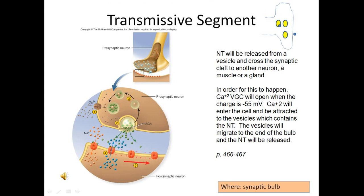The last part is the transmissive segment, which occurs at the synaptic knob. The neurotransmitter is going to be released from vesicles, cross the synaptic cleft, and bind to the next neuron.